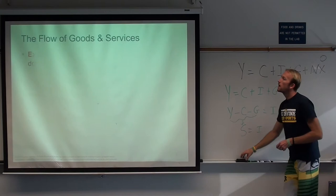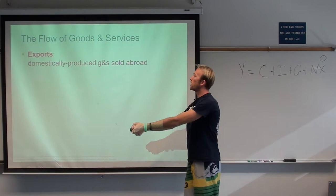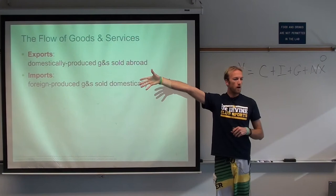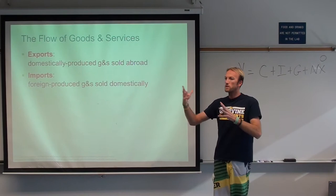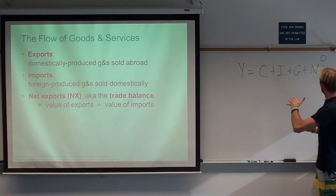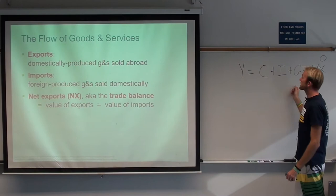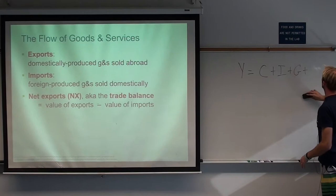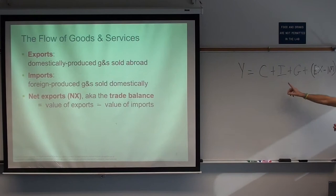Exports are goods produced here locally and sold abroad. Imports are goods produced abroad and then consumed here. For simplicity, we assume selling and consumption take place in the same country. Net exports is exports minus imports — we already defined this back when we covered the GDP identity. So instead of writing net exports, I'll write it as exports minus imports, just so we remember.